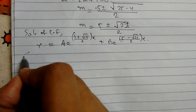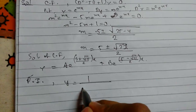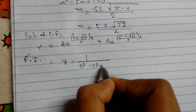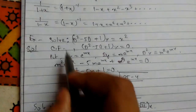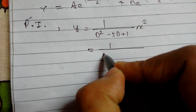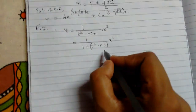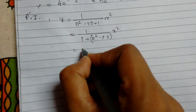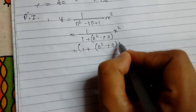Now we need to find the particular integral (PI). PI is given by y equals one over (D² - 5D + 1) times x². We convert this into the standard form: one over [1 + (D² - 5D)] times x².